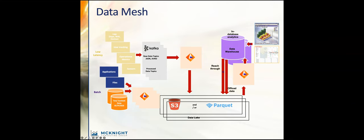A data mesh is an overall data architecture environment. Conceptually, it's pretty simple. Rather than building a single architecture with one lake and one warehouse, the mesh says that's not realistic. Let's have multiple lakes, multiple warehouses, maybe multiple Kafka environments or data integration environments that work on more or less domain boundaries. They're all working on domain boundaries and come together to create some efficiency in this architecture.